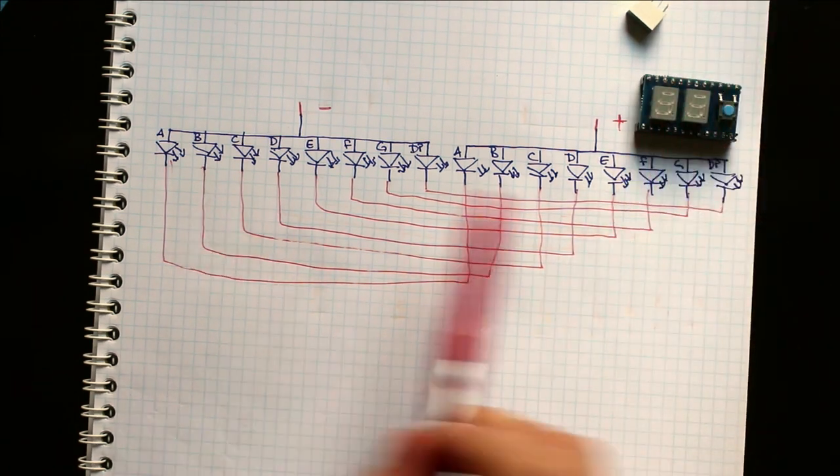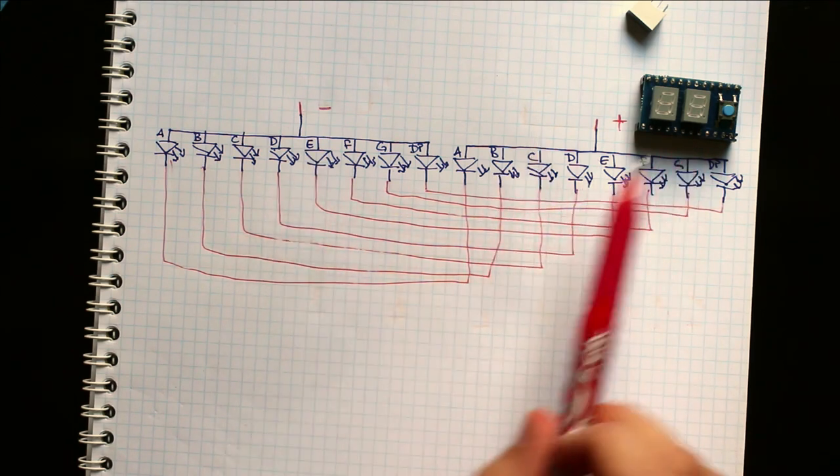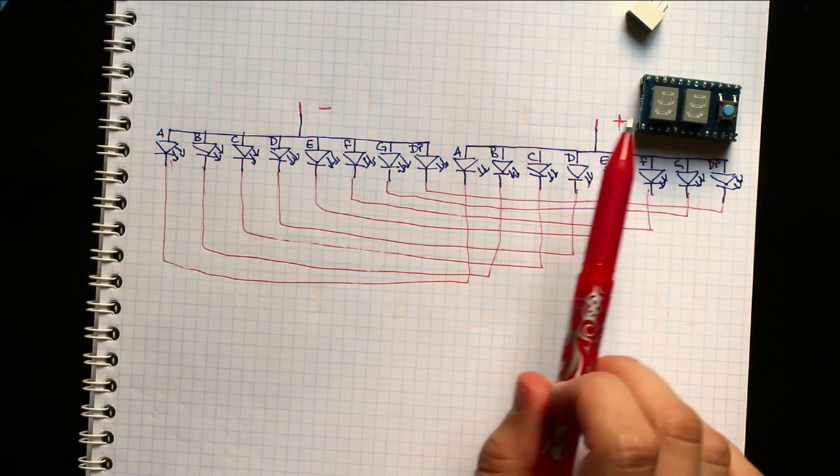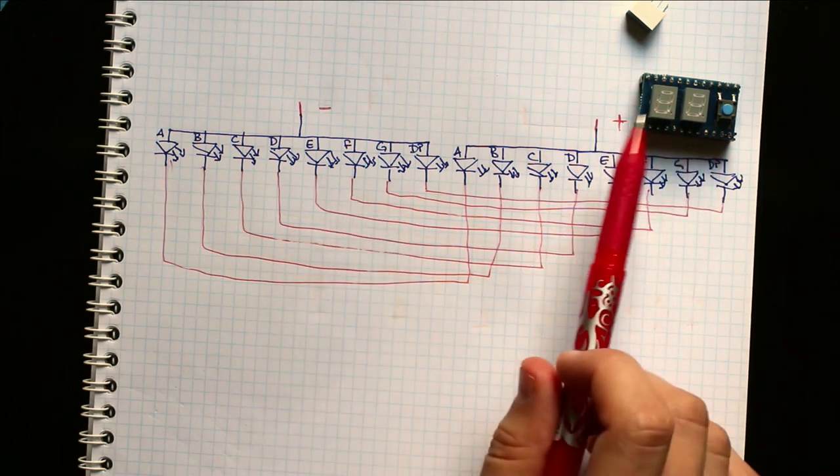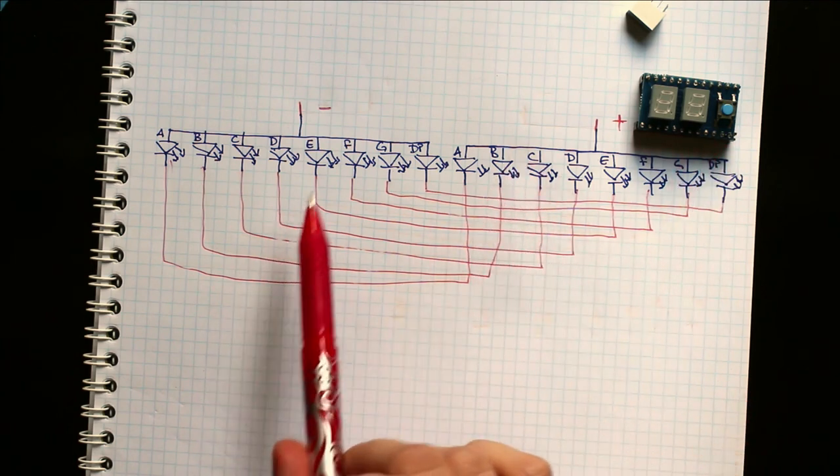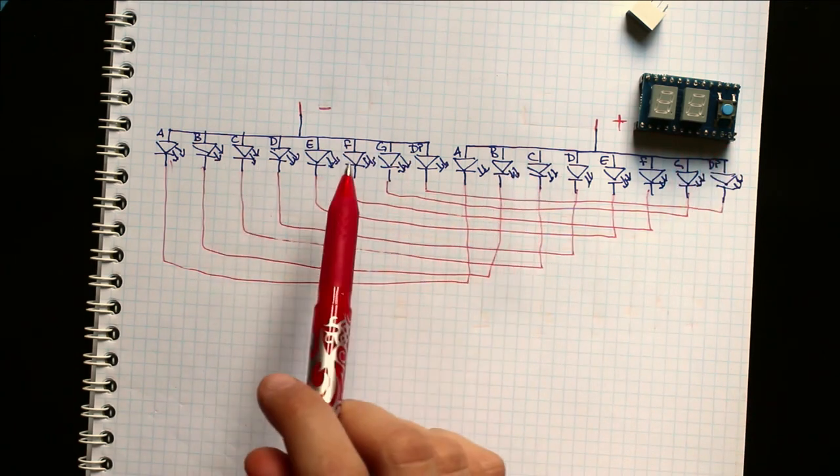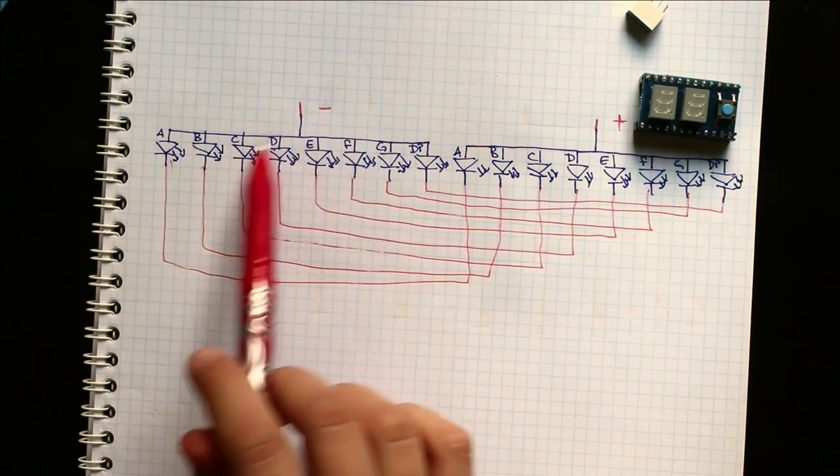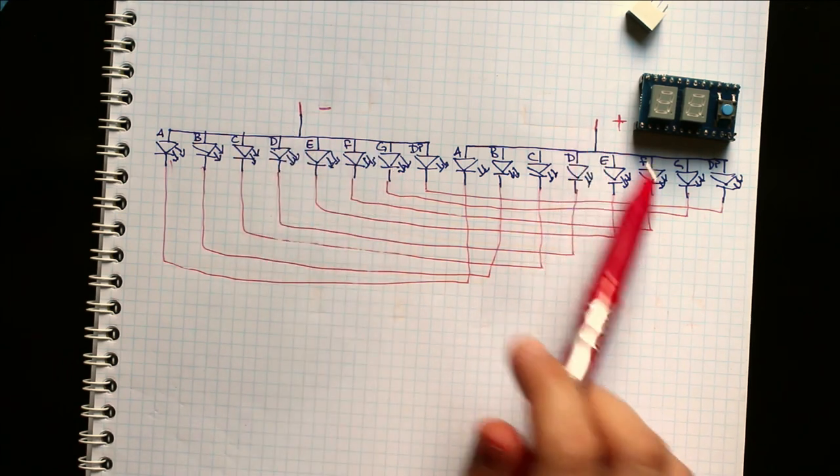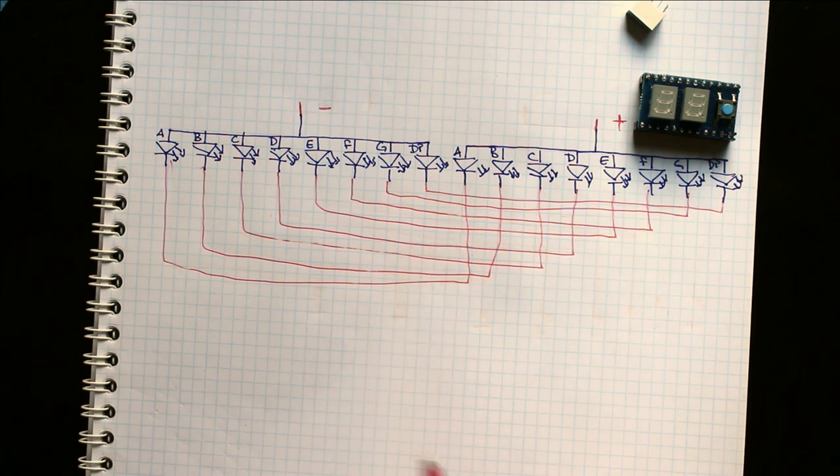So by switching back and forth, basically blinking which number you want displayed on each seven-segment display, you can display two numbers at a time by only having, basically in this case, nine segments for the eight-segment display plus one for each additional number you want to display.